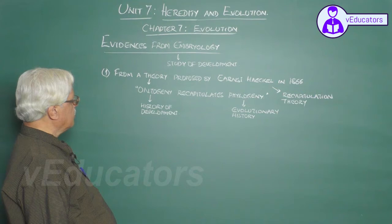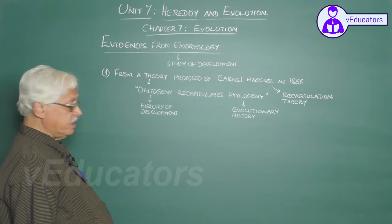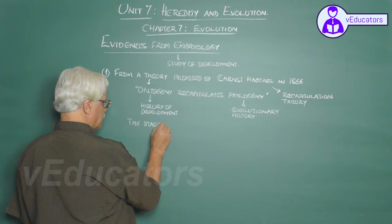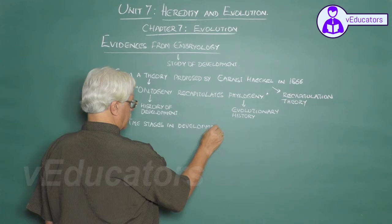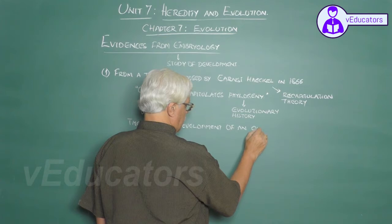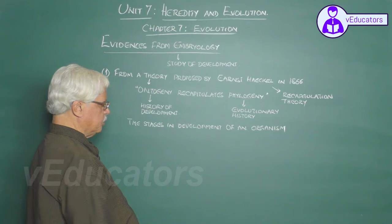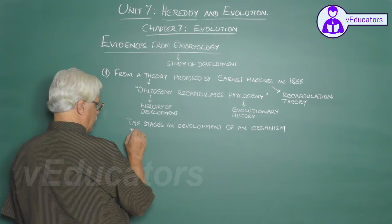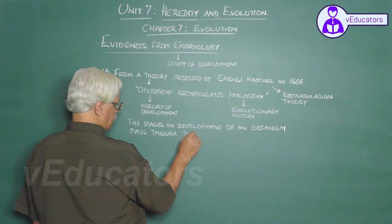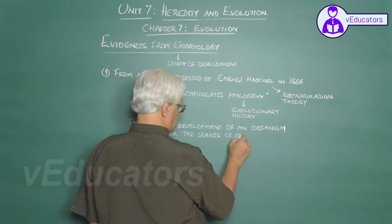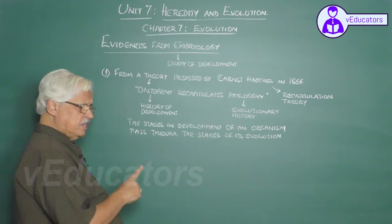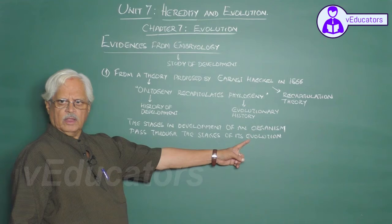Haeckel made the statement that ontogeny recapitulates phylogeny. When he made the statement, he meant that the stages in development of an organism — this is particularly true with respect to animals — pass through the stages of its evolution. In other words, every stage in the development of an organism represents a stage in its evolution.